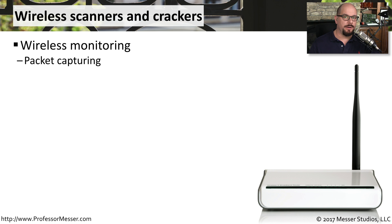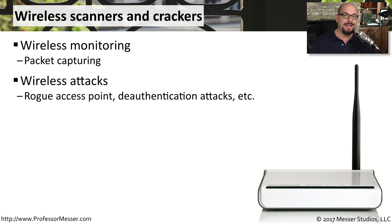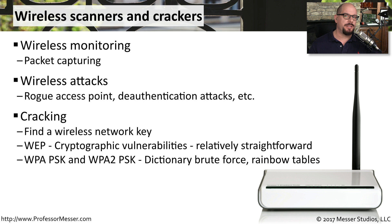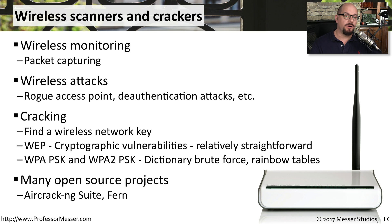Because of the unique characteristics of wireless networks, you need unique security tools — wireless scanners and crackers. The first type of tool you'll need is one to do wireless monitoring, capturing all of the traffic going across the wireless network. You may also want to try your own set of wireless attacks to see if your access points are susceptible to deauthentication attacks. And if you're interested in seeing how difficult it might be to find the password on your wireless network, you can run wireless cracking tools — either cryptographically finding the WEP key, or running a dictionary or brute force attack against WPA2. The Aircrack-NG suite and tools like Fern are good examples.